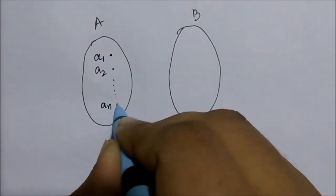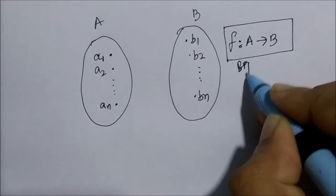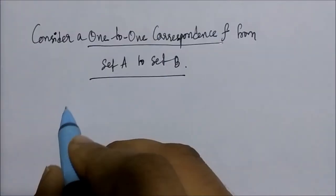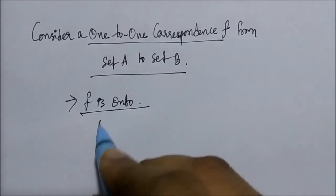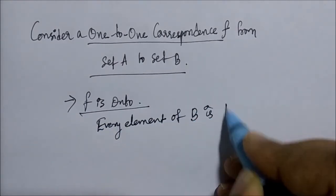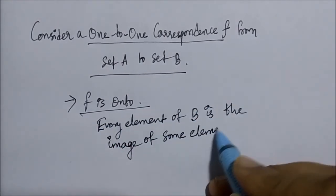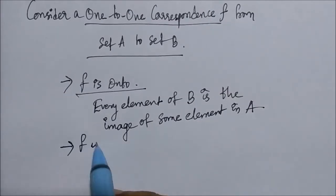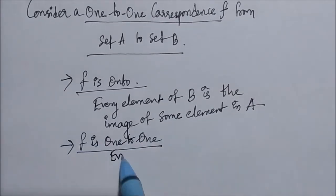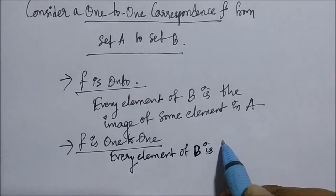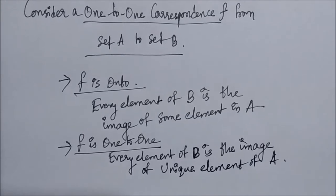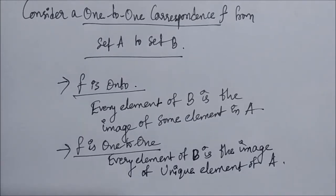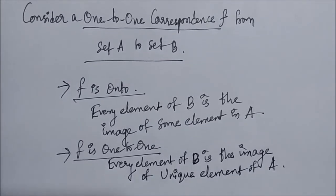When f is a bijection or a one-to-one correspondence, we know two things: f is onto, meaning every element of set B is the image of some element in A; and f is one-to-one, meaning every element of B is the image of a unique element of A. So f is both onto and one-to-one.